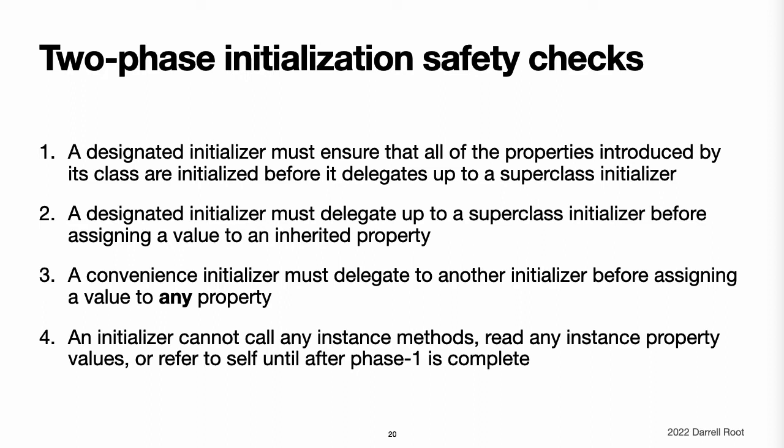Safety check 2: a designated initializer must delegate up to a superclass initializer before assigning a value to an inherited property. If it does not, the new value the designated initializer assigns will be overridden by the superclass as part of its own initialization. Safety check 3: a convenience initializer must delegate to another initializer before assigning a value to any property, including properties defined by the same class. If it does not, the new value the convenience initializer assigns will be overridden by its own class's designated initializer.